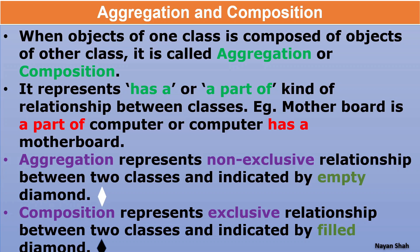That exclusive relationship where both classes are tightly bound with each other is known as composition. And it is the same in real life. Suppose a person is Mr. XYZ and an address is his address. If for any reason that person's address changes or is removed, that doesn't mean the person has expired or the person class cannot exist. Similarly, if the person is not existing, the address class can exist - if I expire, that doesn't mean my house will also disappear. So a person and their house have a non-exclusive relationship - that is aggregation. But a person and their name have a strong relationship - so where there is a strong (exclusive) relationship it is composition, and where there is a weak (non-exclusive) relationship it is aggregation.